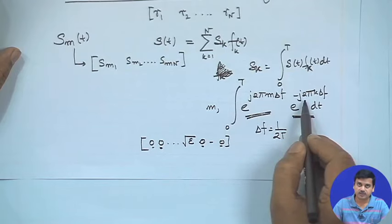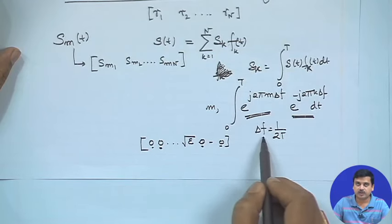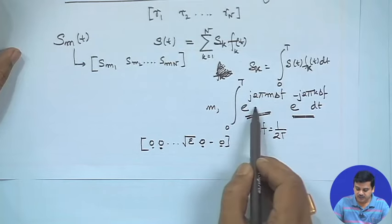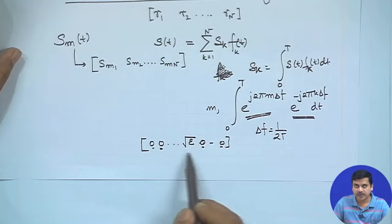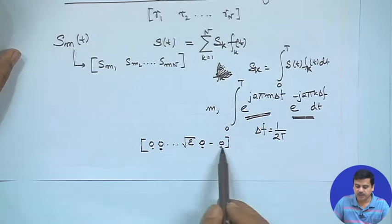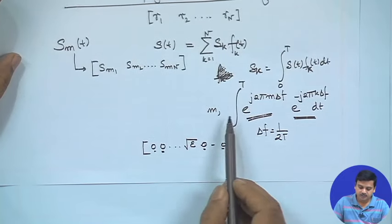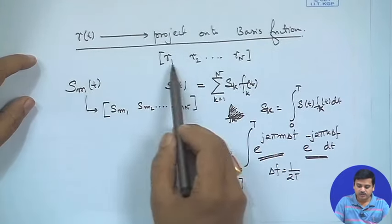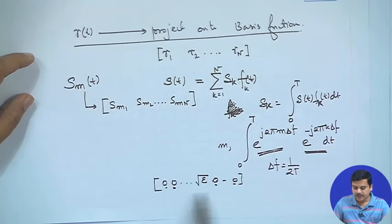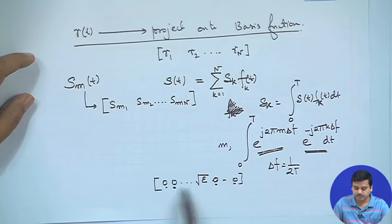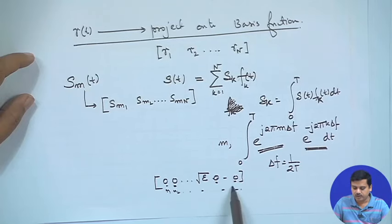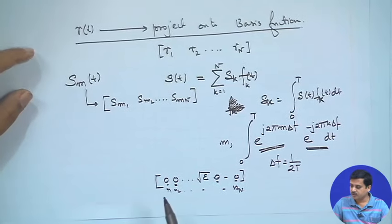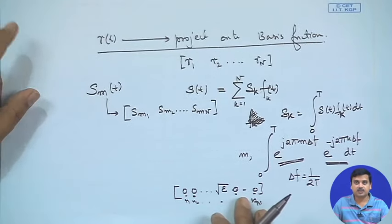Once you do the projection, by virtue of orthogonality — which requires Δf = 1/(2T) — the projection is 0 on all other signals, and there is energy in the desired component when m equals k, and 0 otherwise. When projecting R(t) into components for M-ary FSK in the ideal case, you get the signal components; with noise, you get additional noise components N₁, N₂, and so on along all of these. This is what we had discussed in the previous lecture.